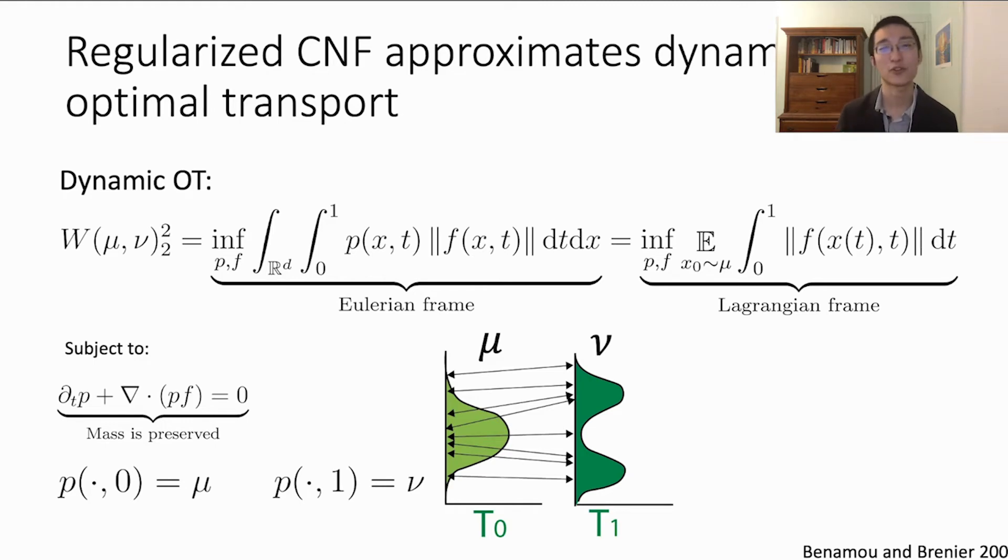Optimal transport studies how to move mass with minimal cost. For example, we have some piles represented by distribution μ at time t0 and want dirt to be piled according to distribution ν at time 1. This is traditionally solved as a linear program to determine the mapping between points at time 0 and time 1.